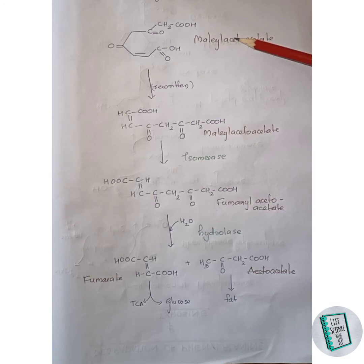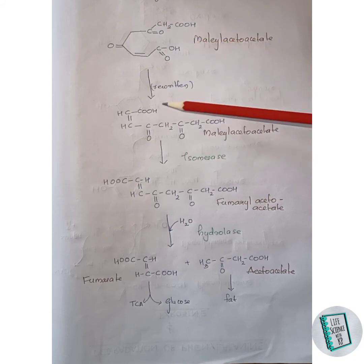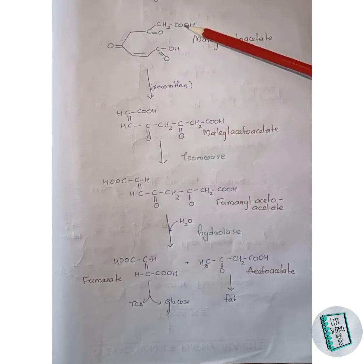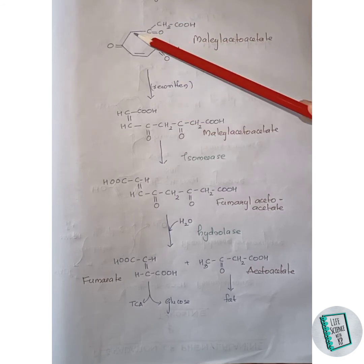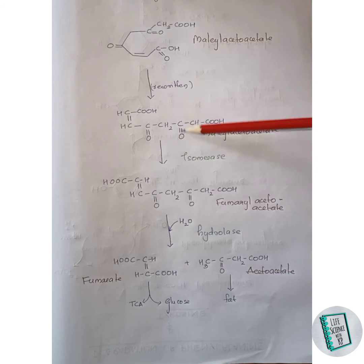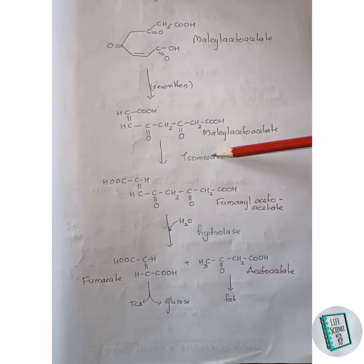This is the maleylacetoacetate formed, now rewritten in its structural form — there is no modification or change, just rewritten structurally. So this is: COOH, then CH2, C double bond O, CH2, C double bond O, CH double bond CH, and COOH. This maleylacetoacetate then in the presence of isomerase enzyme forms fumarylacetoacetate.